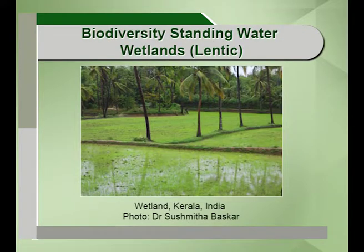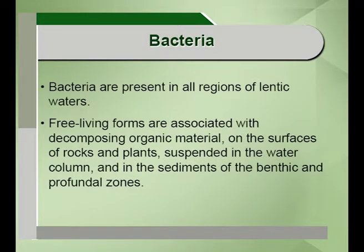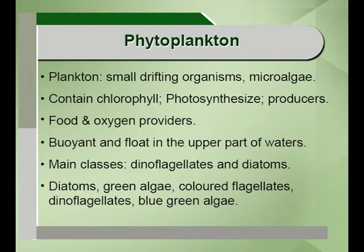Moving on to the biodiversity of standing water wetlands, we look at a picture of a wetland photographed in Kerala. The first and most primitive organisms are bacteria, which are free-living unicellular forms found in the benthic and profundal zones, suspended in the water column and sediments. Phytoplankton — phyto meaning plant and plankton meaning small drifting organisms — are also called microalgae. They contain chlorophyll, provide food and oxygen through photosynthesis, and float buoyantly on the water surface. Main classes include dinoflagellates and diatoms; examples include blue-green algae and coloured flagellates.